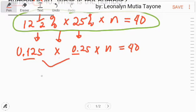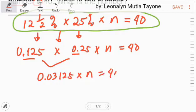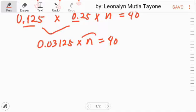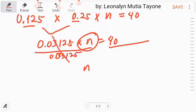So the answer here is 0.03125 times n equals 40. To isolate n, because that's what we're looking for, we divide both sides by 0.03125. Cancelled out, now it's isolated.